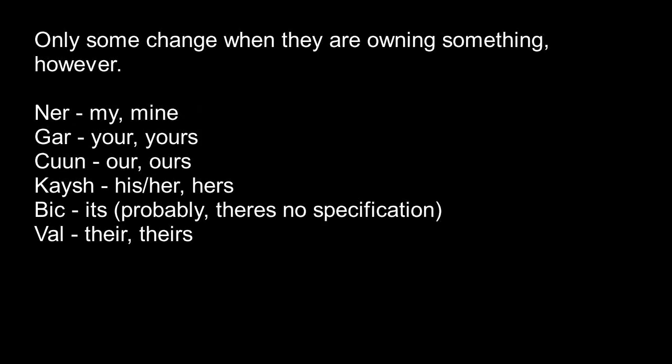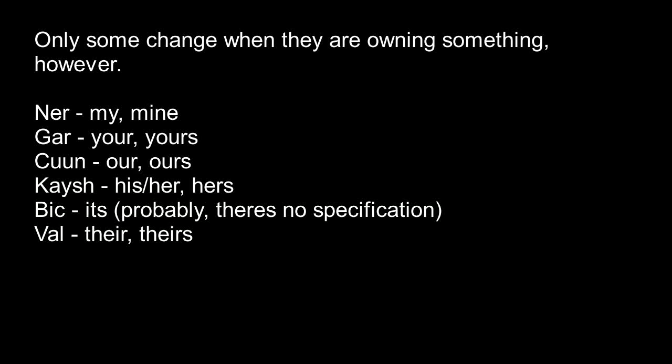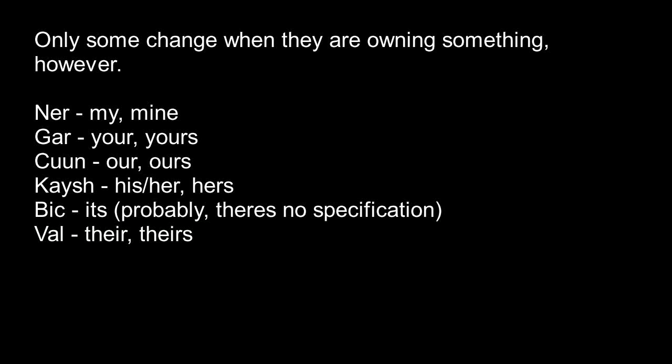Some do change when you are talking about possession. For example, ni becomes ner, which means my or mine. Gar stays the same. Kun is the possessive form of me, meaning our or ours. Keshe stays the same — it is his or hers. Bik most likely stays the same; however, there is nothing written saying that it changes, so I do not change it here. Val stays the same as well — it is their, theirs.